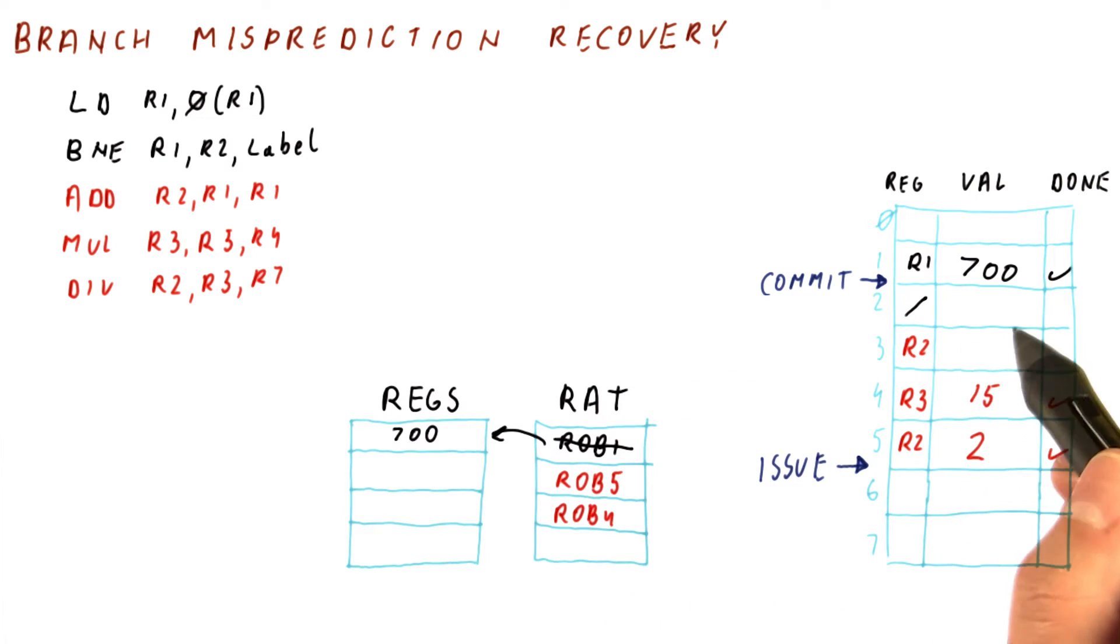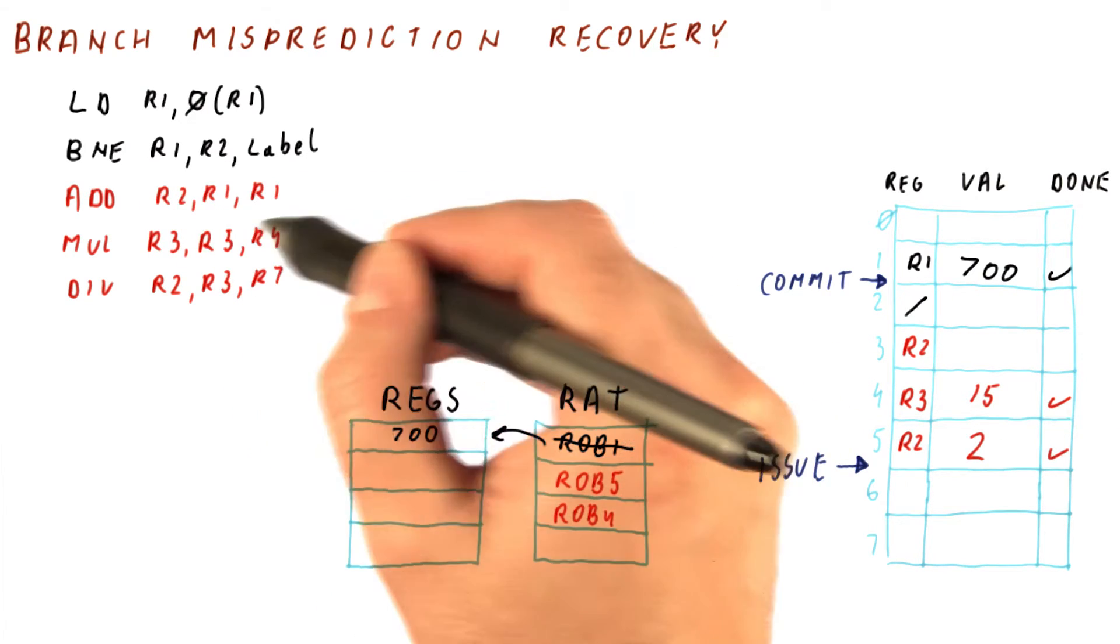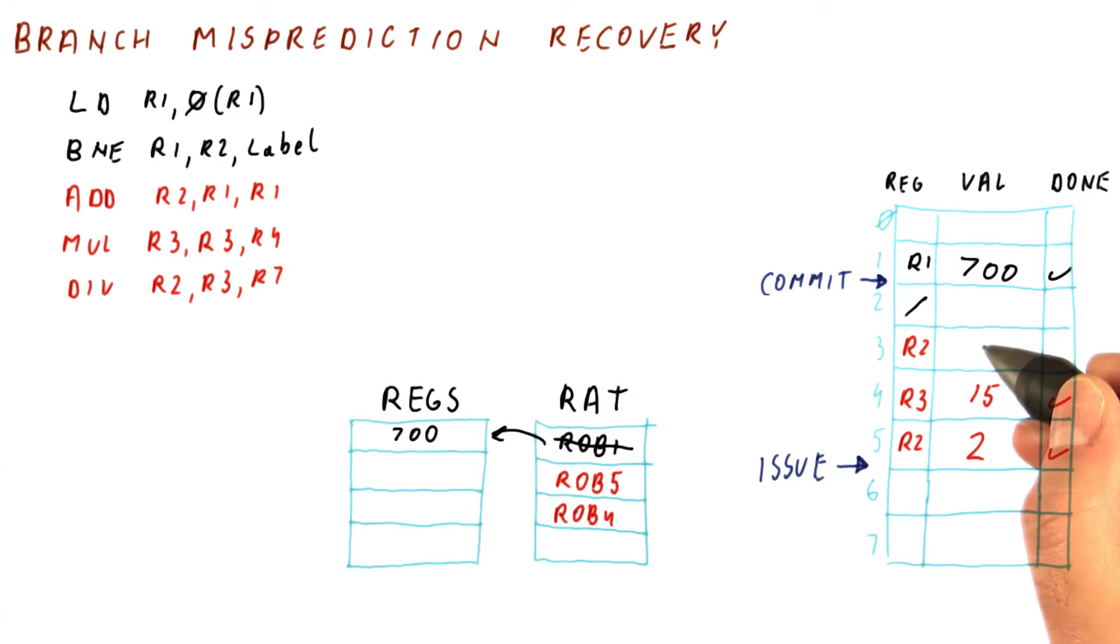Let's suppose that the branch takes longer to figure out than the add. So this add completes, produces a value of, let's say, 3, and it's done. And that's all that happens here.